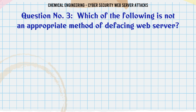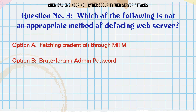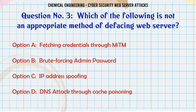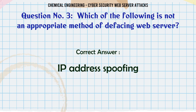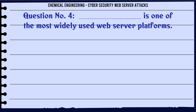Which of the following is not an appropriate method of defacing a web server? A. Fetching credentials through MITM. B. Bruteforcing admin password. C. IP Address Spoofing. D. DNS attack through cache poisoning. The correct answer is C. IP Address Spoofing.